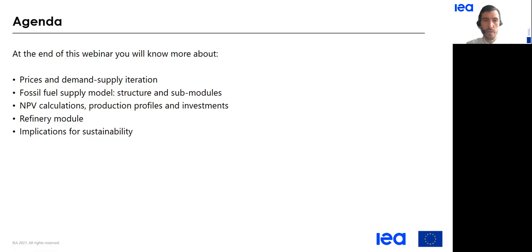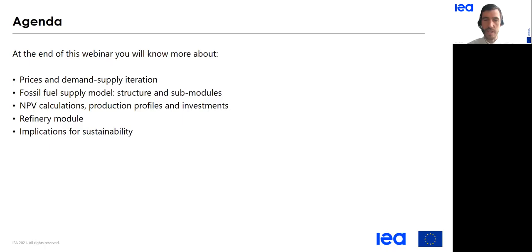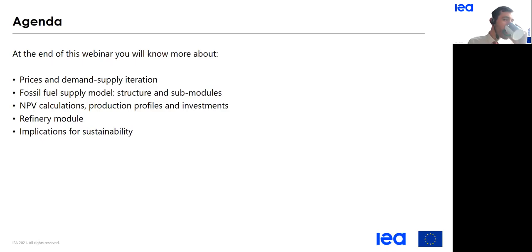What are we going to talk about today? By the end of this webinar, you will learn more about how the supply modeling module works on price and demand-supply iteration. We will present the structure of the fossil fuel supply model and its sub-modules. We will enter into more economic considerations with NPV — net present value — production profiles and investments. We will focus on the refinery module and discuss sustainability of fossil fuels.